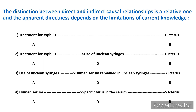Then it was realized it was not just unclean syringes, but the presence of human serum remains in unclean syringes causing icterus. And further, not just the serum remains but the presence of a specific virus in the serum leading to icterus. So this distinction between direct and indirect is relative and depends on the current state of knowledge.